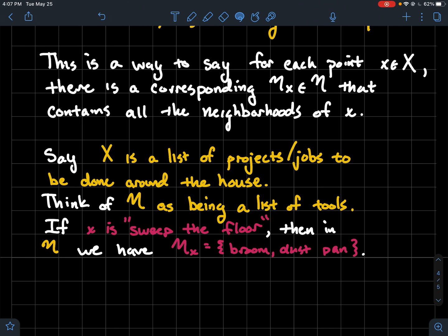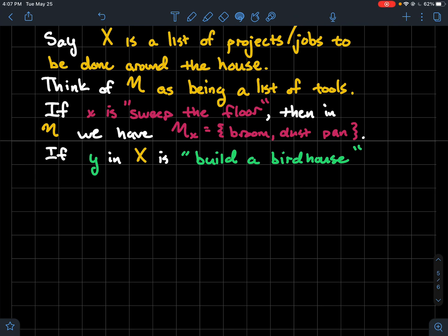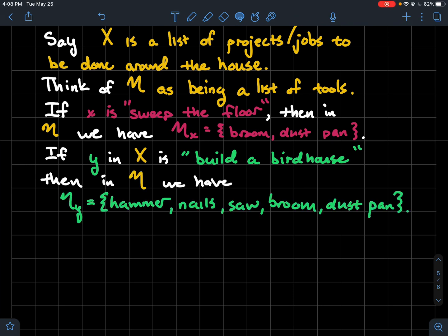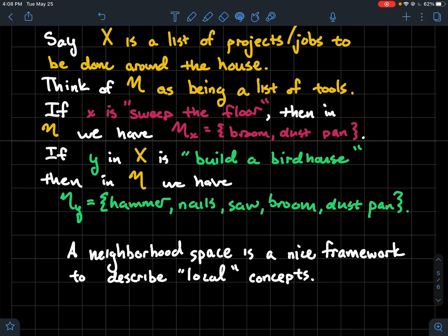So for that particular job x I just need these things in order to do it. So like for that particular element x I have this system of neighborhoods. Again who knows what a system of neighborhoods is for a house project. I'm just trying to get you comfortable with the fact that we're relating an element of a set to some subsets of the set itself. And then just another example, if y is build a birdhouse, maybe the tools you need for that are a hammer, nail, saw, broom and dustpan. So you can go to your toolbox, the whole toolbox is just N, and you can reach in and get the tools that you need for that particular job. So that's what we're trying to capture here.